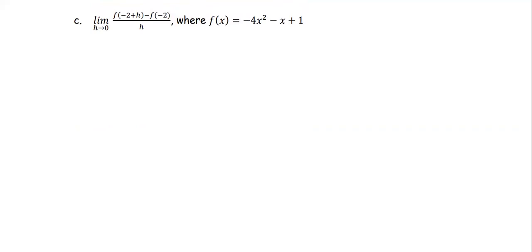In this example, we have the function f given to be negative 4x squared minus x plus 1. We're going to find the limit of the function f at negative 2 plus h minus the function f at negative 2, all divided by h, as h approaches 0.